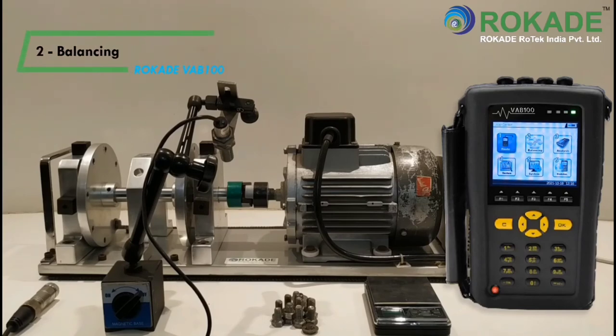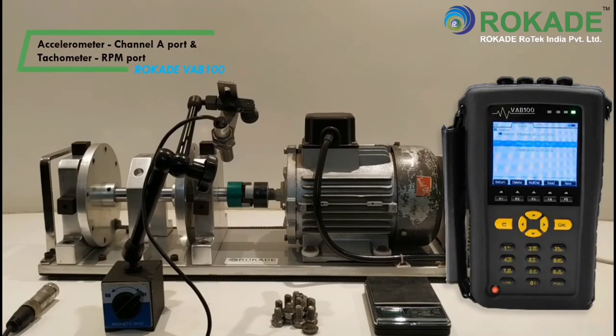Click on number 2 button to select balancing. Connect the accelerometer sensor in channel 8 port and tachometer sensor in RPM port. Click on new.